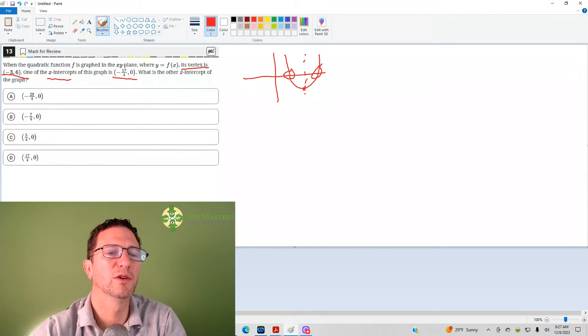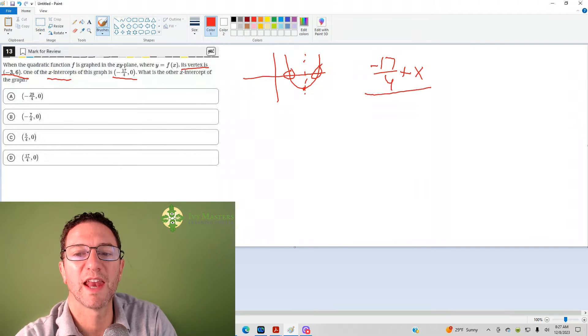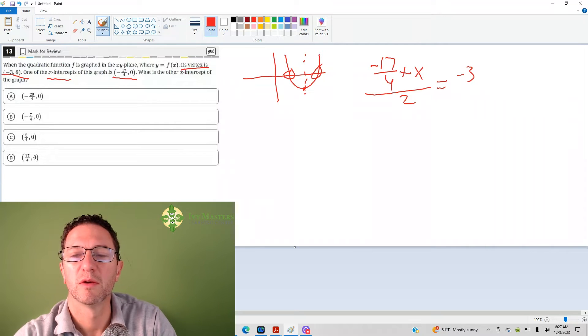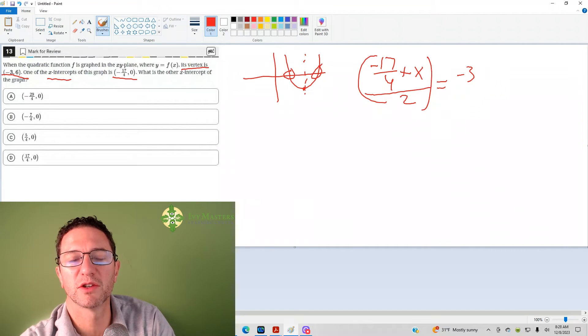So what we can do is, here, it's negative 17 over 4 plus the other x-intercept. You take an average of those two, and so it equals negative 3, which is the x-part of the vertex. And I just illustrated it on the graph where it would work.